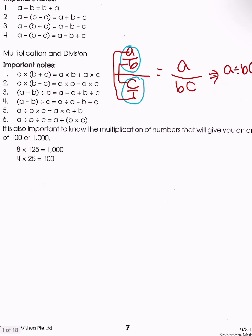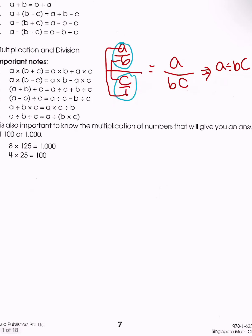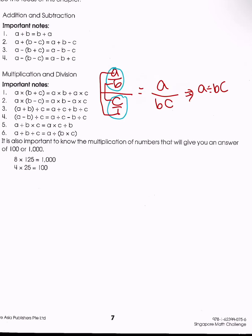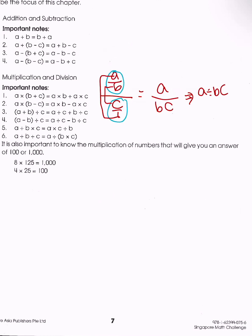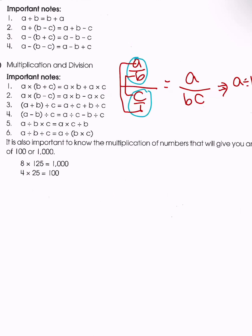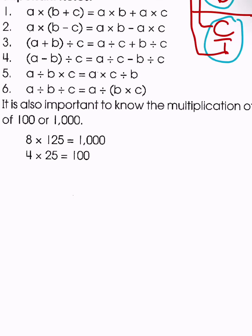It's also important to know the multiplication of numbers that give you an answer of 1,000 so that you can get your calculations done quickly. We should memorize that 8 times 125 is equal to 1,000.